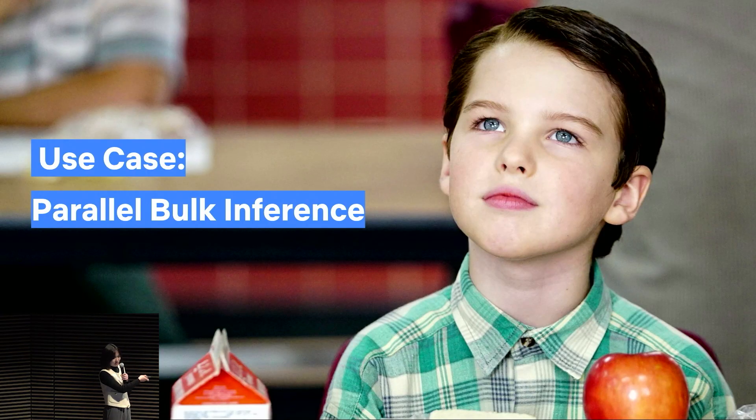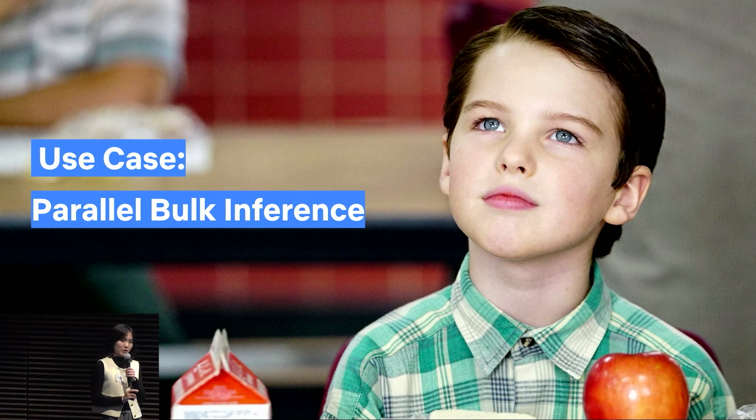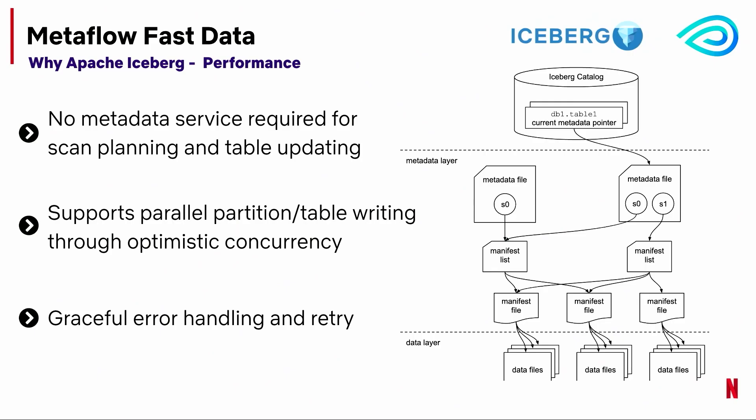Before jumping straight into the use case, I want to show you some good stuff about Iceberg. Netflix moved from Hive to Iceberg starting in 2020. It comes with an independent metadata layer that allows us to do scan planning without knowing anything about the underlying storage system. It also has elegant error handling and a retry mechanism, so if one node fails it won't affect the others. Backed by this Iceberg design, Metaflow fast data is able to support reading and writing in parallel through optimistic concurrency.